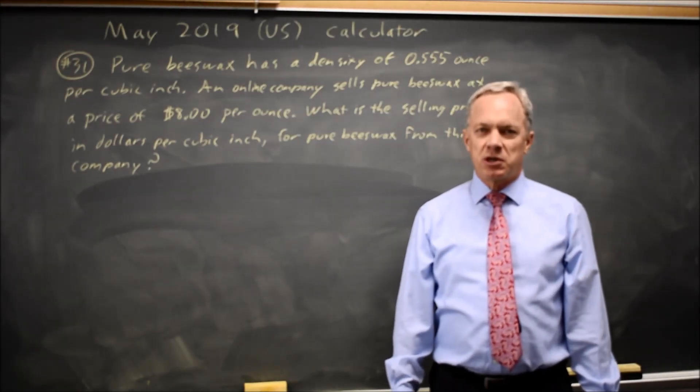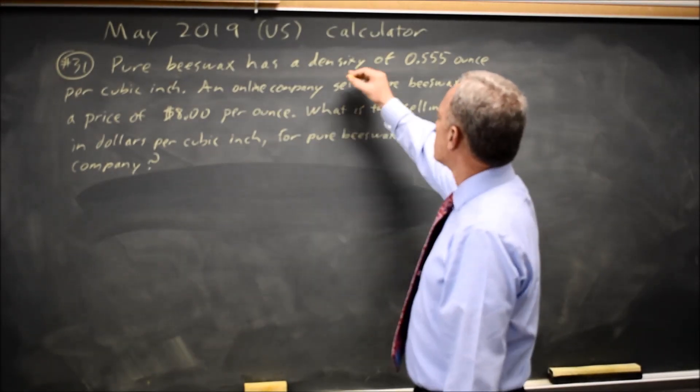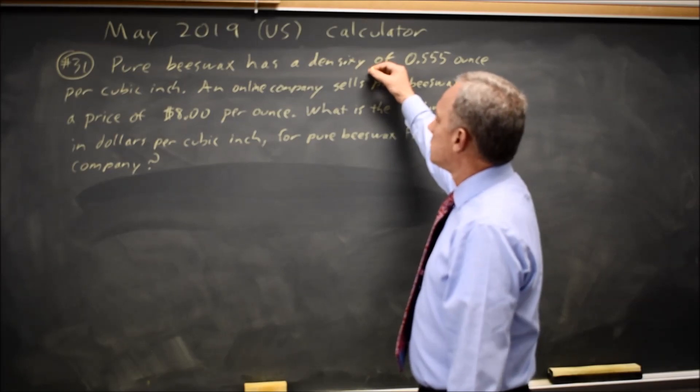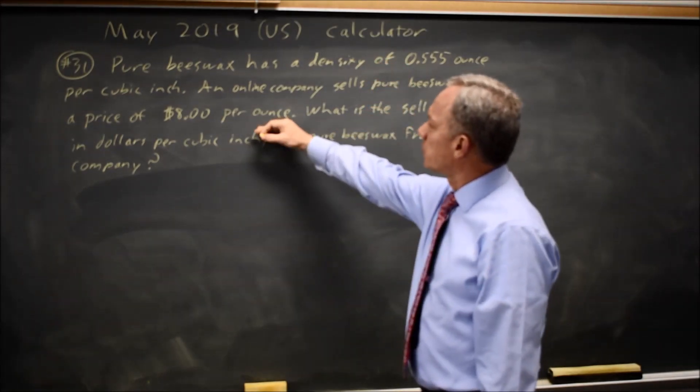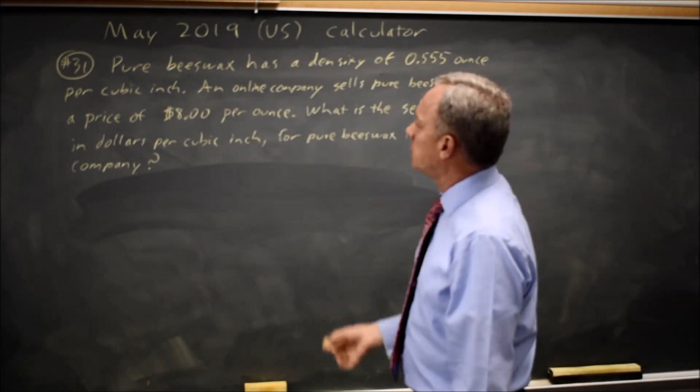This is calculator question number 31. College Board tells us the price of beeswax in dollars per ounce and the density in ounces per cubic inch.